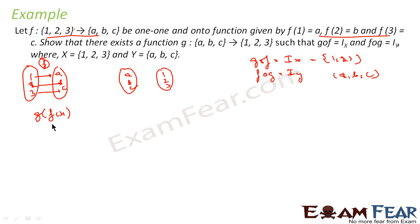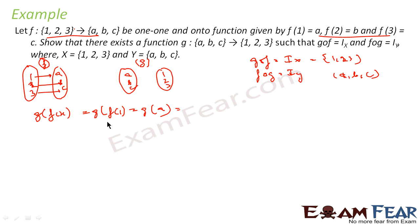Now gof(x) means g(f(x)). If the input is 1, this becomes g(f(1)) = g(a). Similarly, g(f(2)) = g(b) and g(f(3)) = g(c). The values of g are not yet defined since the mapping hasn't been done.